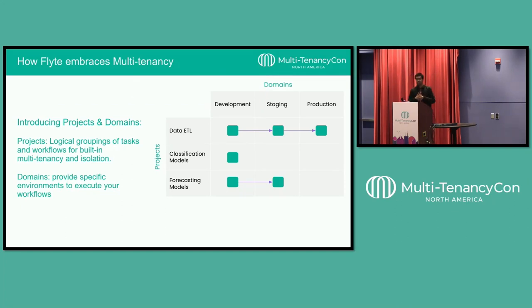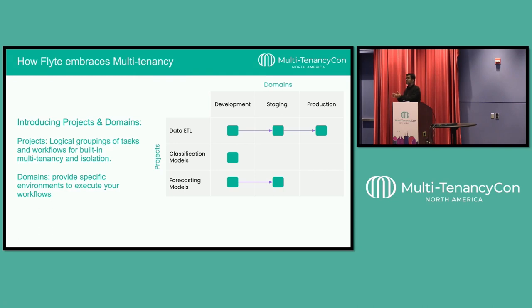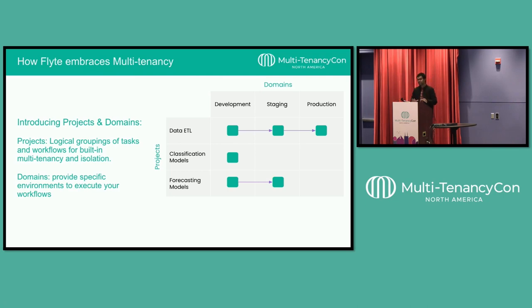How does Flyte basically embrace multi-tenancy? Flyte has the concept of projects and domains. Projects are essentially logical groupings of different workflows that exist independently of each other. So you could have two separate teams on this platform — your data science team mainly working on model training, and the MLOps team working on model deployment. They can work individually in silos without worrying about each other — you get logical groupings and built-in isolation with projects. Domains allow you to run your models in any environment — development, staging, and production — with proper isolation for each.